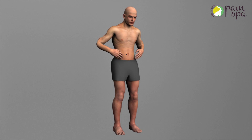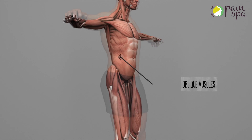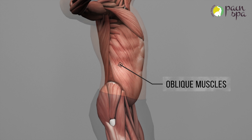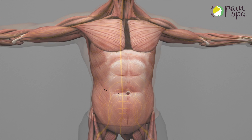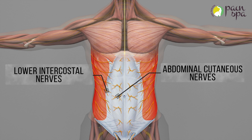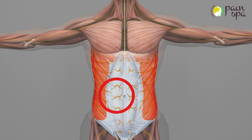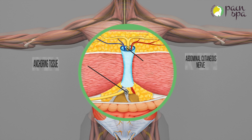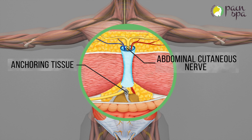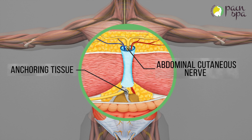The anterior abdominal wall is made up of the rectus muscle in the midline and the external and internal oblique and transversus abdominus muscles on the sides. The nerve supply to the anterior abdominal wall is derived from the lower intercostal nerves. These nerves run a tortuous course through the rectus muscle and are liable to entrapment, resulting in chronic abdominal wall pain.